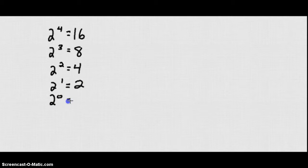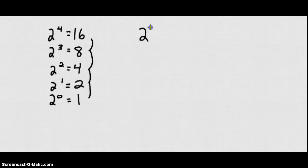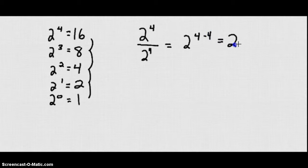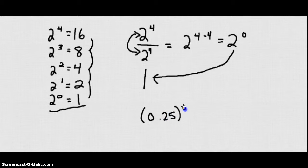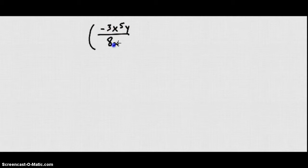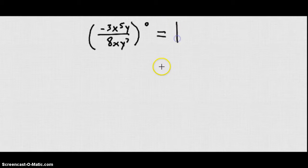You would probably expect it to be half of 2, which is 1, if we're following the pattern of halving. Another reason: if I take 2 to the fourth divided by 2 to the fourth, I get 2 to the 4 minus 4, or 2 to the zero. Any number over itself equals 1, so 2 to the zero power equals 1. In fact, any number to the zero power equals 1 — even something like 0.25 to the zero power. So a complicated expression like negative 3x to the fifth y over 8xy to the seventh, all to the zero power, simply equals 1.